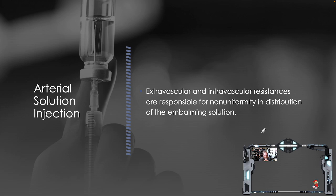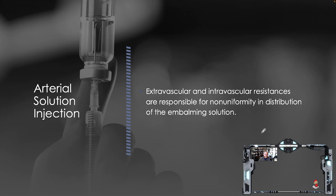Extravascular and intravascular resistances are responsible for non-uniformity in distribution of the embalming solution. If we have more blood retained on one side of the body because of the way it was laying, and we start injecting before the fluids have had a chance to gravitate back to a level of normalcy, chances are good we're going to see injection and dyes happening on the path-of-least-resistance side first, until it fills and then forces itself into the other side of the body.